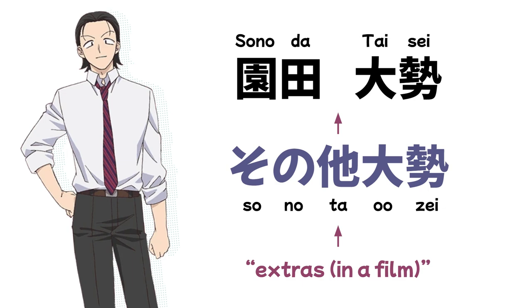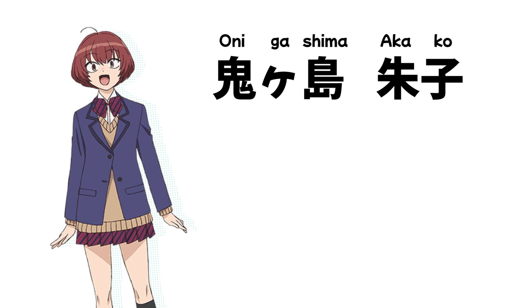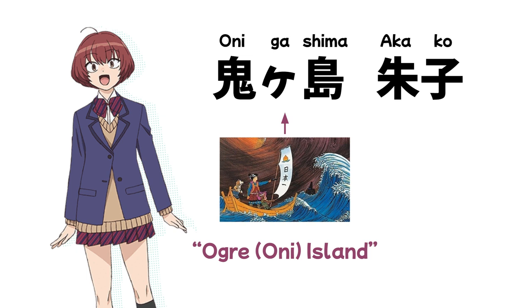Next up we have Yamai's close friend, Onigashima Akako. 'Onigashima' is the name of the island of ogres in the classic Japanese folktale Momotaro, and 'Aka' means 'red.' Her name overall references the fact that although she is usually a sweet, sociable girl, she has a very short temper — like an ogre.